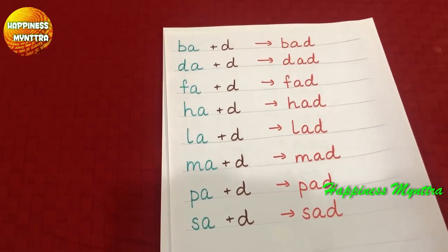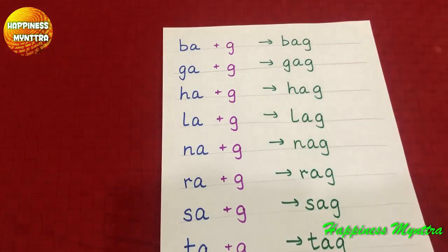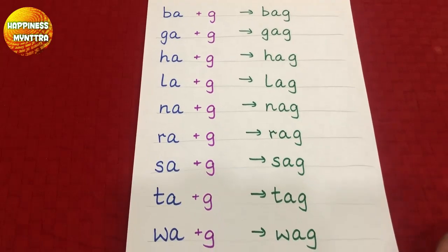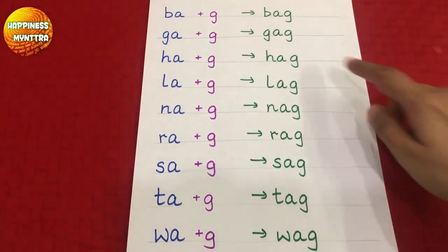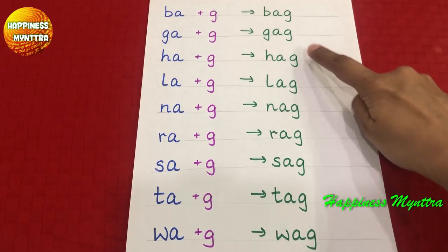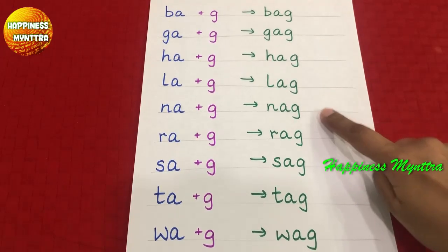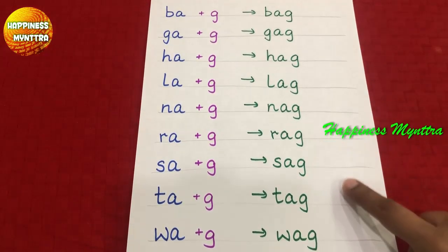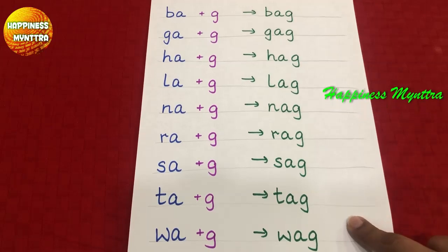We've done the AD family and after that we have the AG family. So these are the words: bag, gag, hag, lag, nag, rag, sag, tag, and wag.